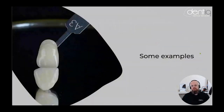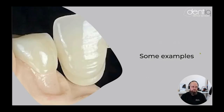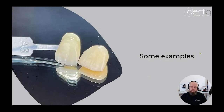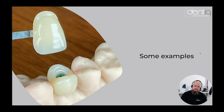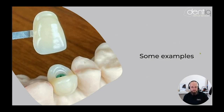Let me show some examples. This A3 crown came straight out of the printer — I just polished it. Another beautiful A3, straight from the printer, polished and ready to go. Here's an interesting case using Ceramax implants from Switzerland: a fully metal-free system with a zirconia implant body, zirconia base, carbon fiber screw, and a metal-free holistic crown on top — a completely metal-free restoration.